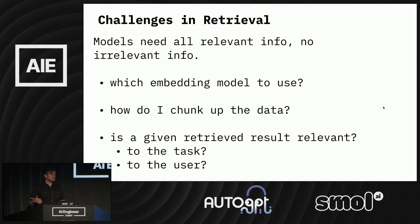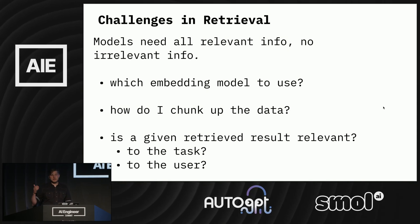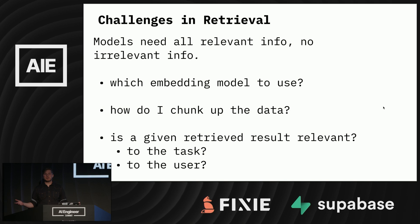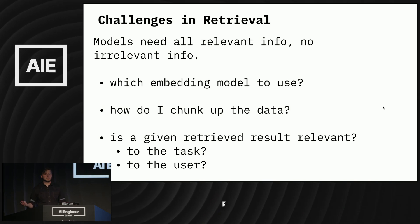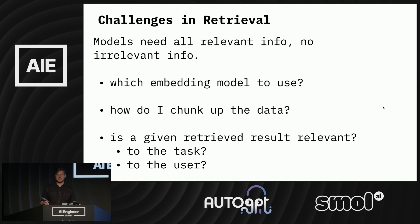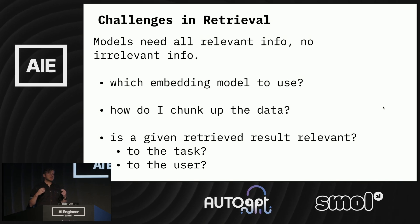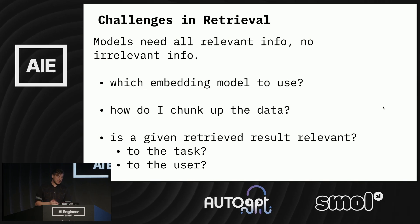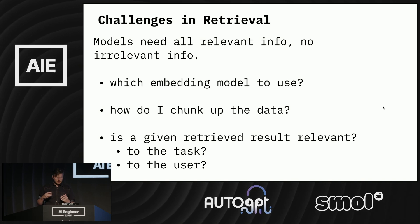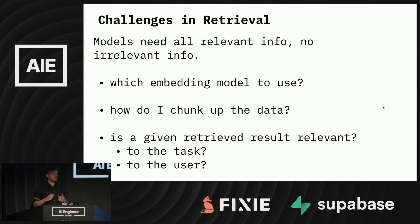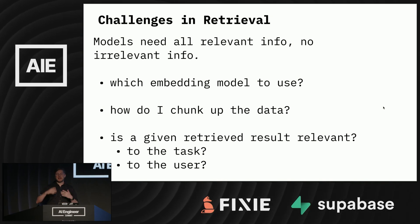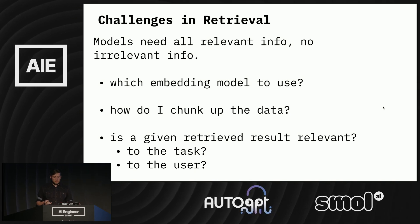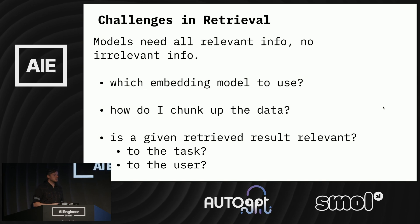So what does it mean to actually retrieve relevant info and no irrelevant info? You need to know which embedding model you need to be using in the first place, and we've all seen the claims from the different API and embedding model providers. This one is best for code, this one is best for English language, this one is best for multilingual datasets. But the reality is the only way to find out which is best for your dataset is to have an effective way to figure that out. The next question, of course, is how do I chunk up the data? Chunking determines what results are available to the model at the end. And it's obvious that different types of chunking produce different relevancy in the return results. And finally, how do we even determine whether a given retrieved result is actually relevant to the task or to the user?